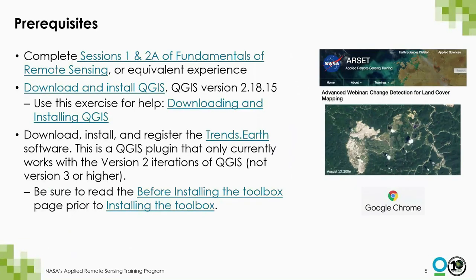Here are the course prerequisites. You should take the eLearning course Introduction to Remote Sensing, the fundamentals listed here, or have equivalent knowledge of remote sensing. You also need to download and install QGIS — a slightly older version, as QGIS 3, which was recently released, will not work with the Trends.Earth plugin we're highlighting. Please also download, install, and register the Trends.Earth software, which is a QGIS plugin, and add it to your library prior to completing the exercises.